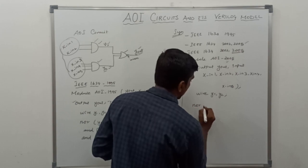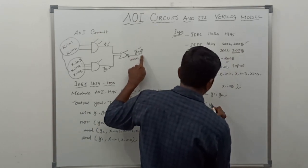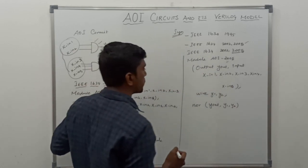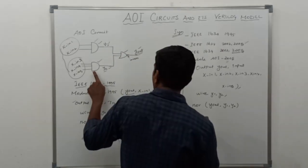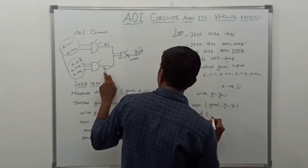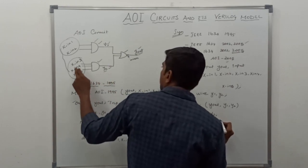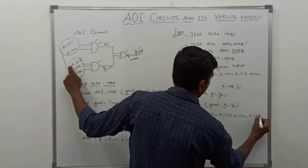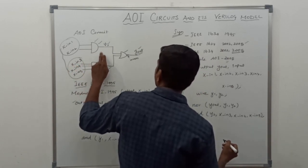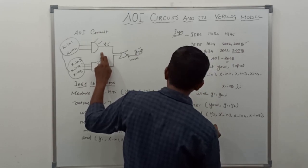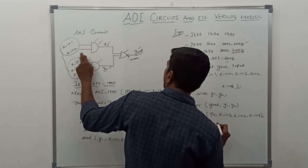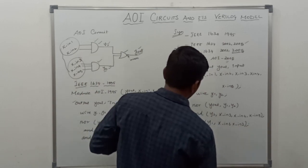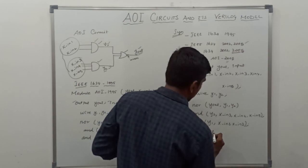Then the operations: first, NOR operation — output of NOR is yout, inputs are y1 and y2. Then the second gate, AND operation — output is y2, inputs are x_in3, x_in4, x_in5. Then the first AND gate — output is y1, inputs are x_in1 and x_in2. Finally, close the module with endmodule.